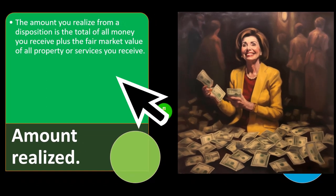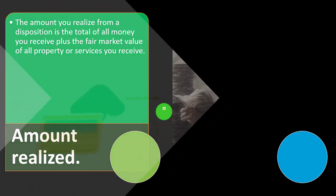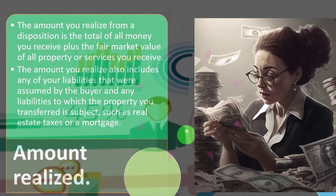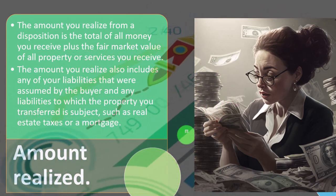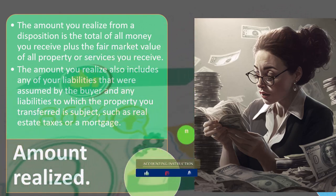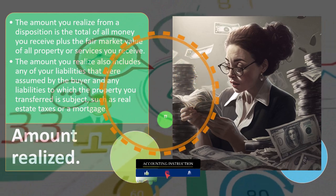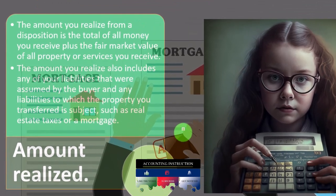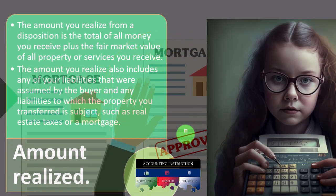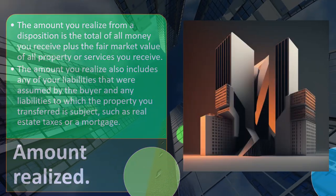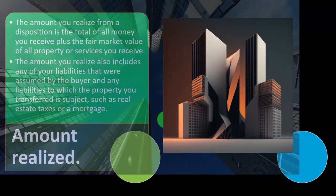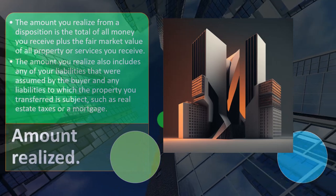The amount you realize from a disposition is the total of all money you receive plus the fair market value of all property or services you received. The amount you realize also includes any of your liabilities assumed by the buyer and any liabilities to which the property you transfer is subject, such as real estate tax or a mortgage. If you have a building, it may go up in value, but most other assets — like a forklift or equipment — go down in value.